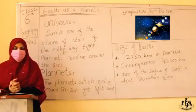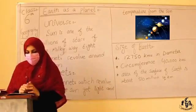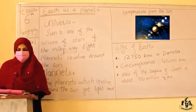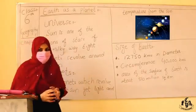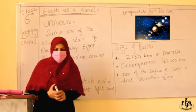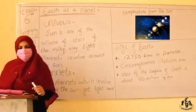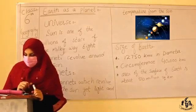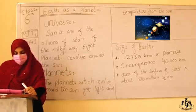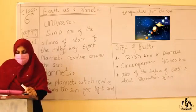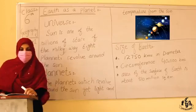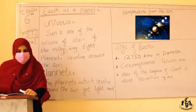The movement of the Earth in its orbit around the Sun is called revolution. This movement is anti-clockwise. The speed of this movement is about 107,000 kilometers per hour. The Earth completes one revolution in its orbit in about 365 days and 6 hours, which is approximately one year.